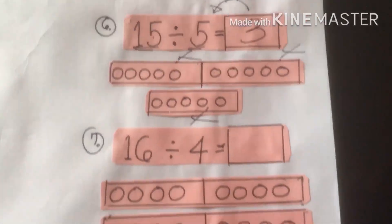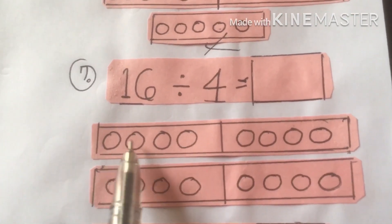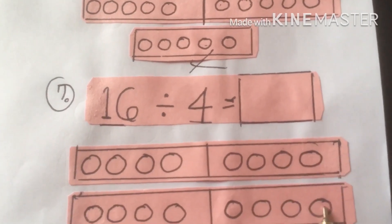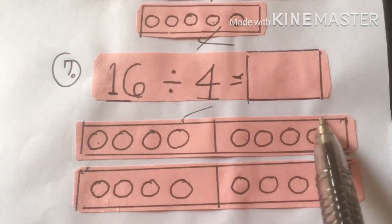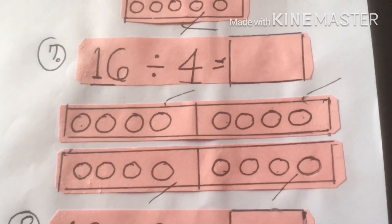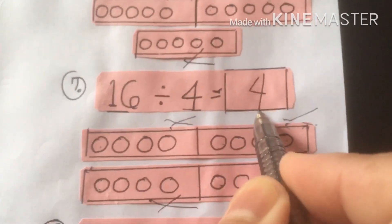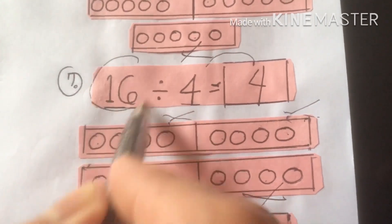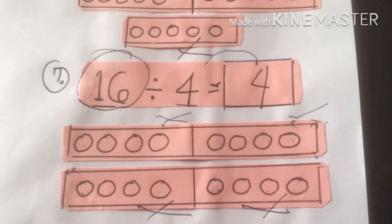Number 7: 16 divided by 4. We draw 16 beads: 1, 2, 3, 4, 5, 6, 7, 8, 9, 10, 11, 12, 13, 14, 15, 16. Group by 4: 1–2–3–4, 1–2–3–4, 1–2–3–4, 1–2–3–4. Put a check mark and count again: 1, 2, 3, 4. Write 4 as our quotient. 4 times 4 equals 16. So 16 divided by 4 equals 4. That is the division method.